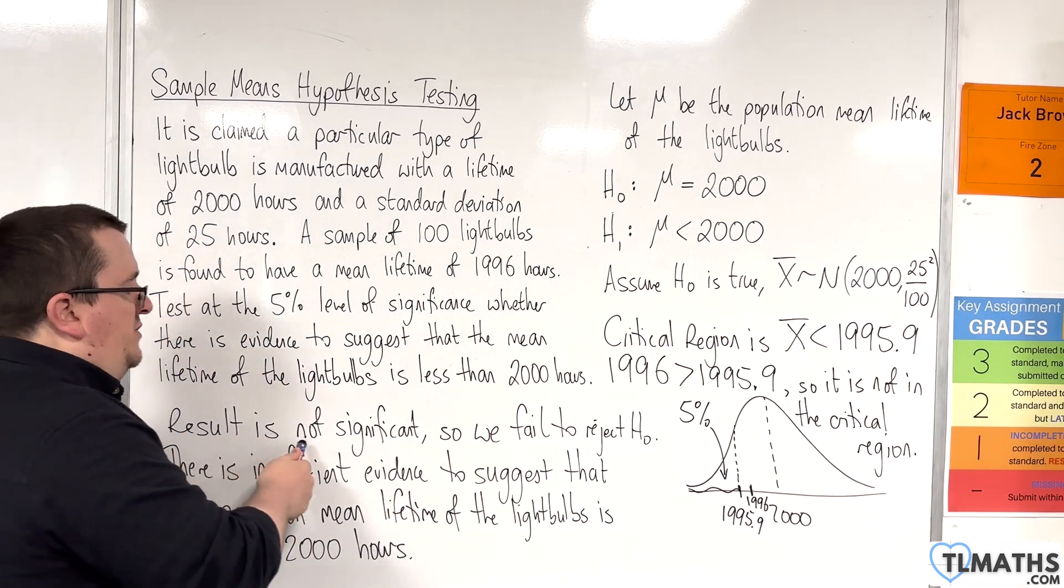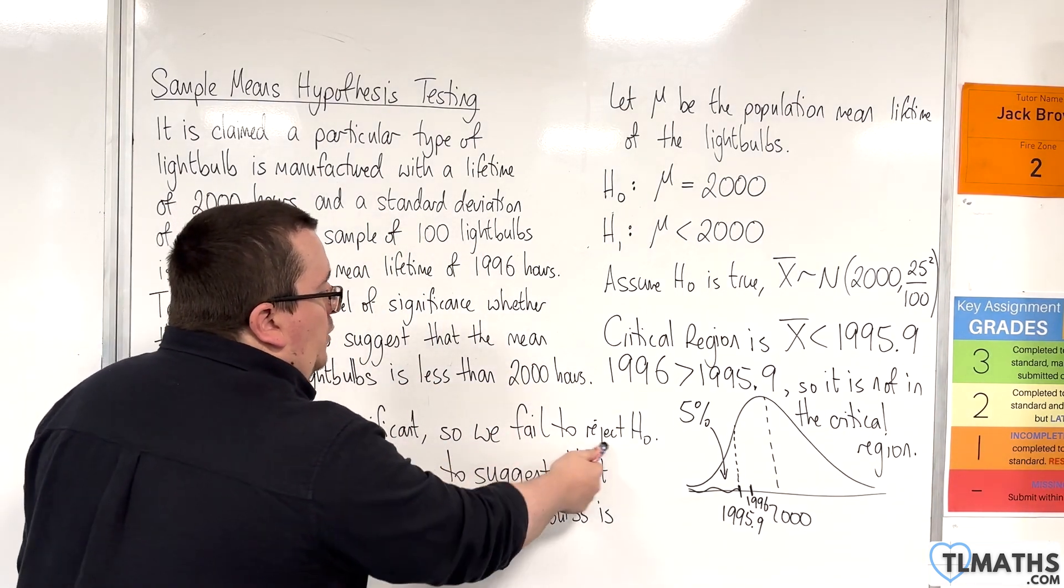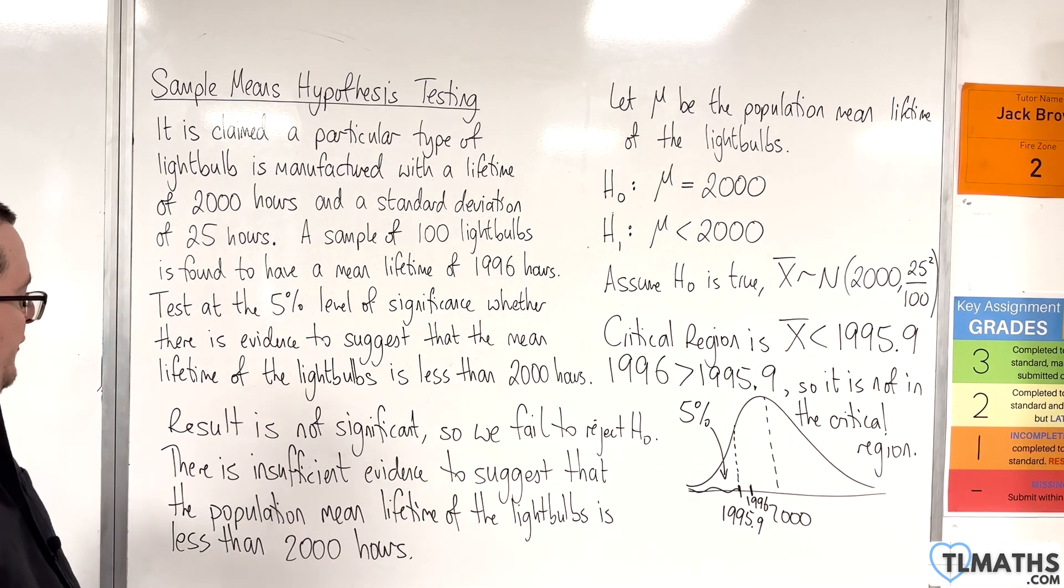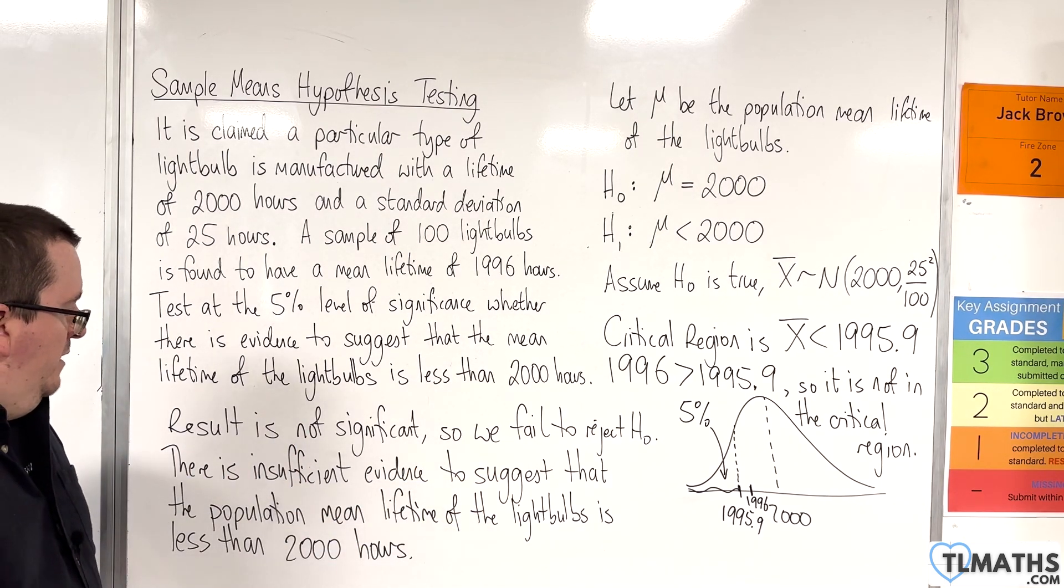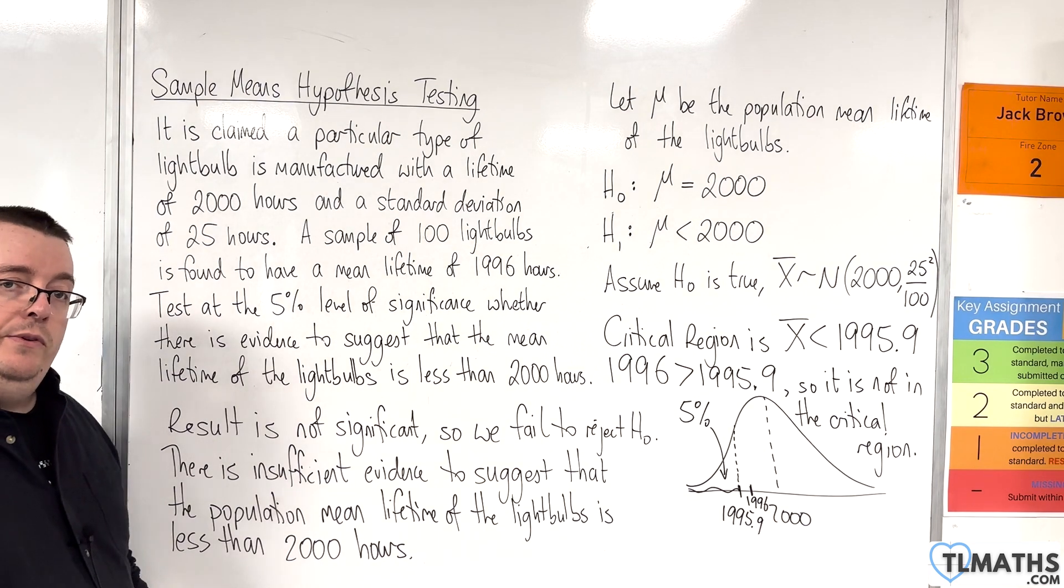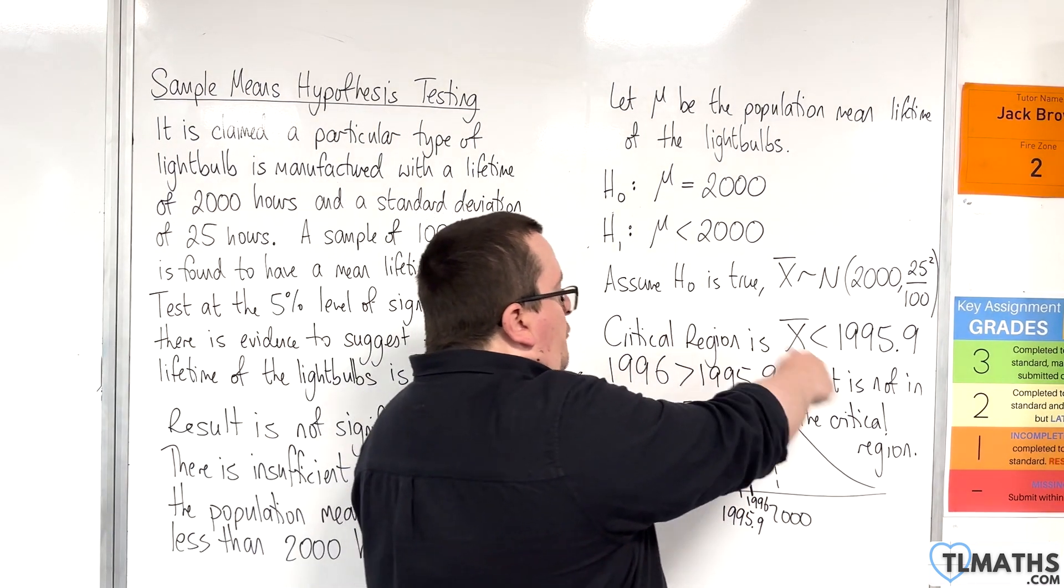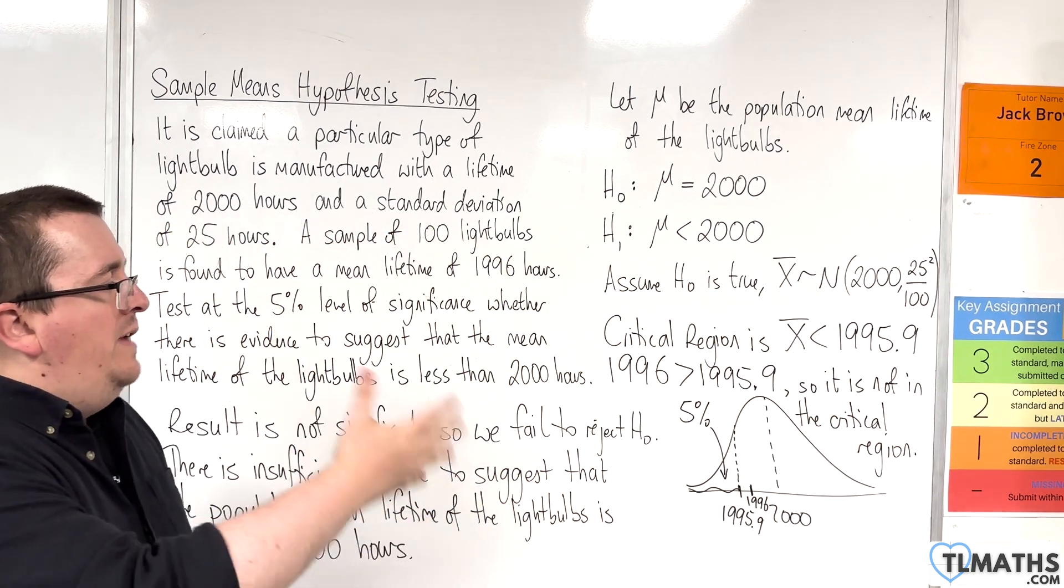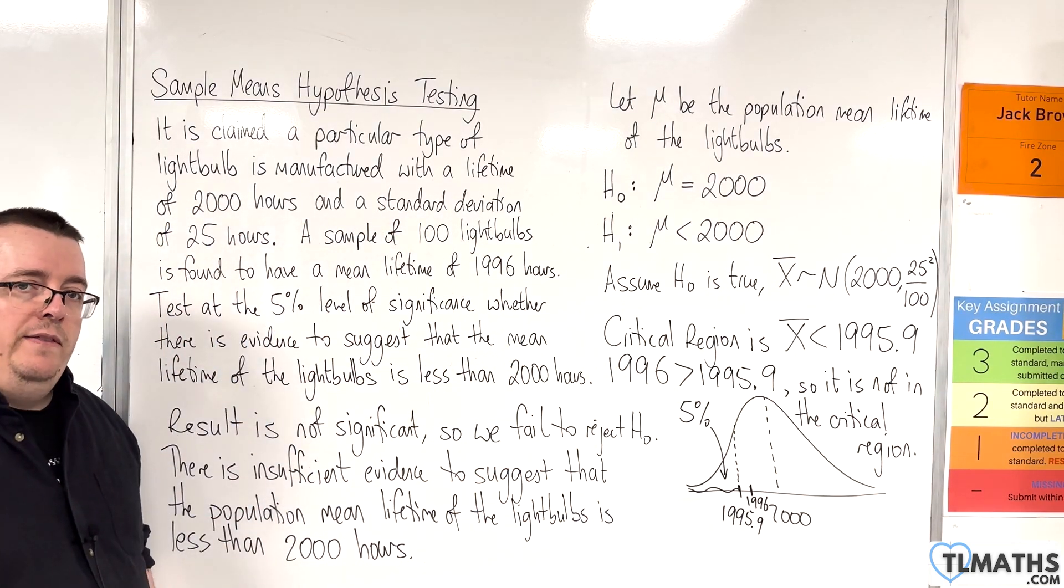So, the result is not significant. We fail to reject H₀. There is insufficient evidence to suggest that the population mean lifetime of the light bulbs is less than 2,000 hours. Same conclusion, just a different way of getting to that result. So, that is how you do the critical region method in this example.